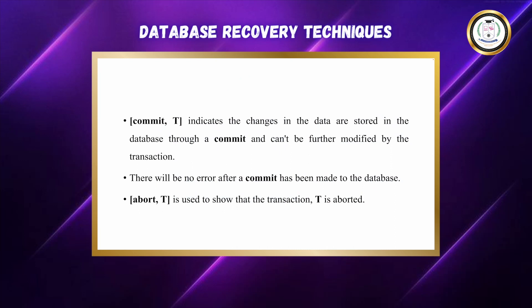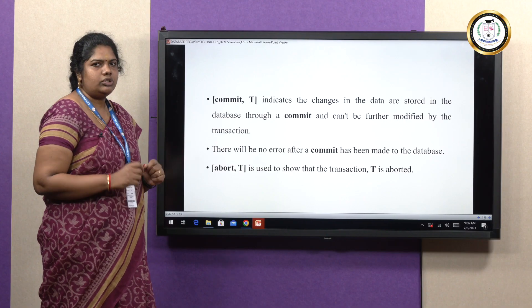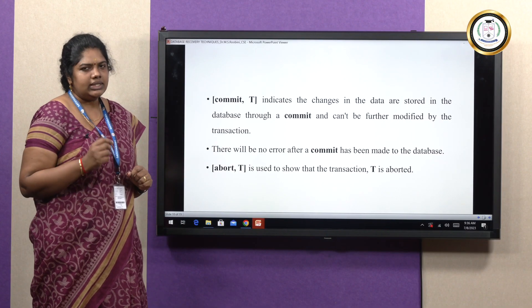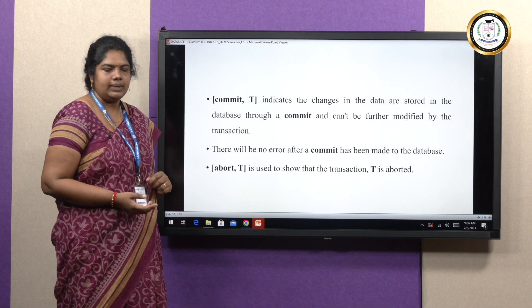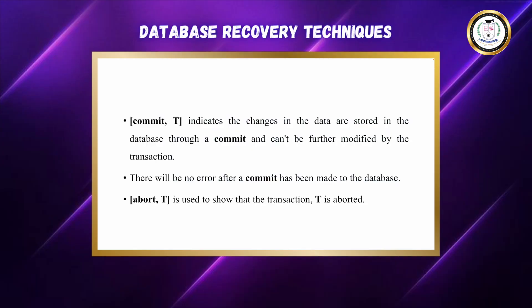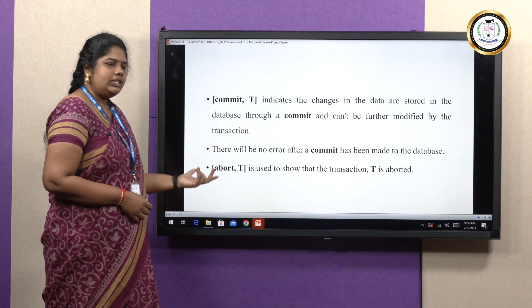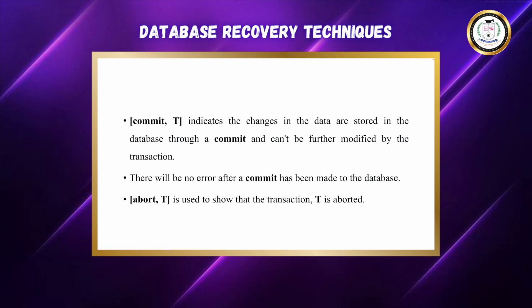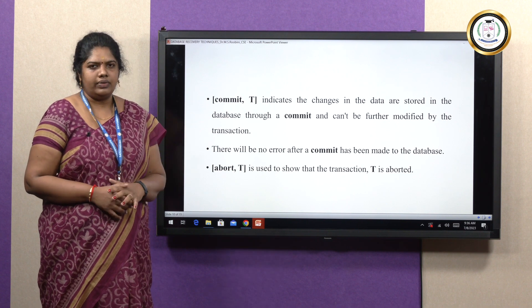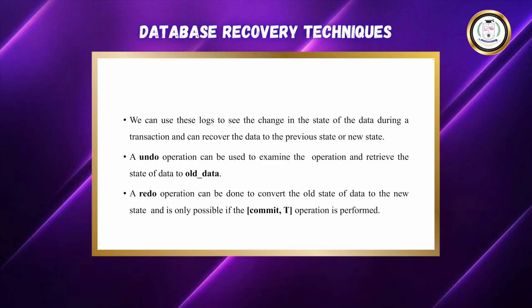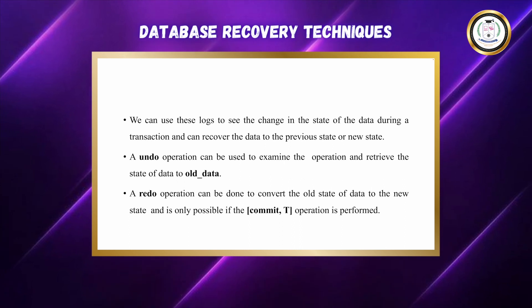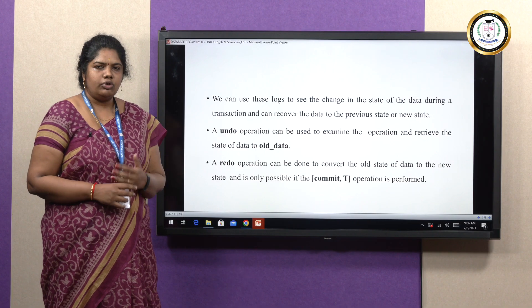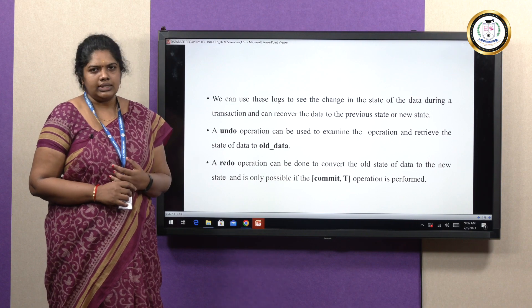The next format is commit(t), which indicates that the changes in the data are stored in the database through the commit operation. Once it is committed, it cannot be changed further in the database. Finally, abort(t) shows that the transaction is aborted. These are the formats of the transaction log. We can use this log to know about the changes in the state of transactions, and either perform an undo or redo operation depending upon the transaction status.